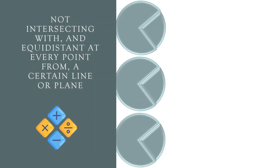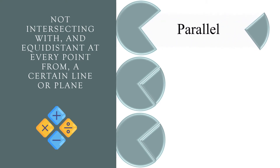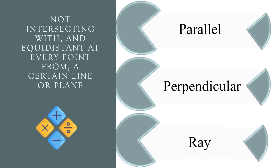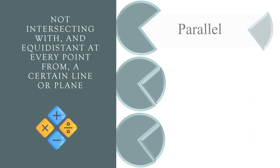Not intersecting with, and equidistant at every point from, a certain line or plane. Parallel, perpendicular, or ray? The correct answer is parallel.